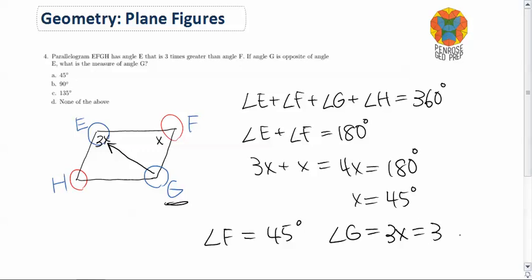Which is 3 times 45 degrees, which equals 135 degrees. Therefore, the answer is C, 135 degrees.